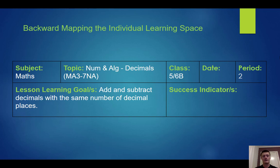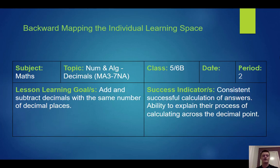I'm a primary trained teacher so my example will be based in the primary space, and what you put here will vary depending on your particular subject. The learning goal for this lesson is that my students are able to add and subtract decimals with the same number of decimal places — a year five/six class. The success indicators are that students have successful calculation of answers consistently, but also that they're able to explain their process of calculating across the decimal point and can identify errors.